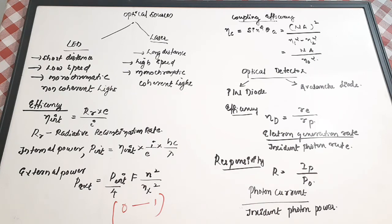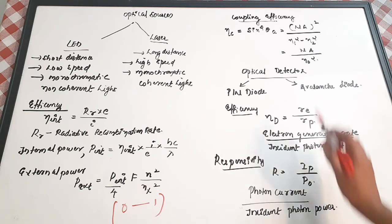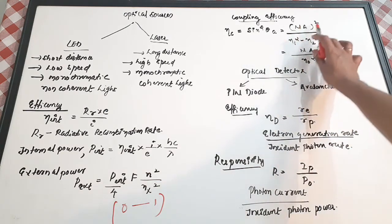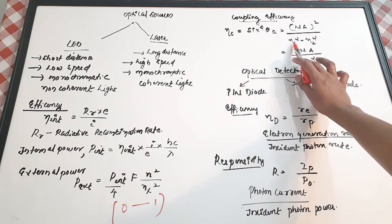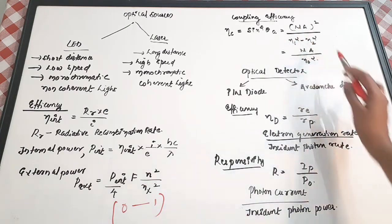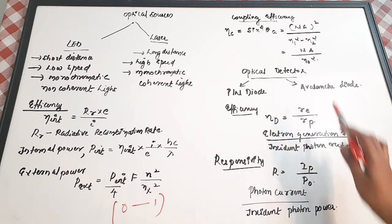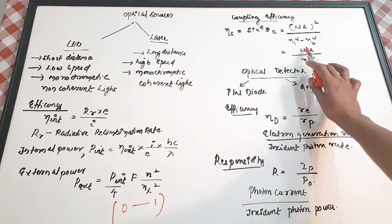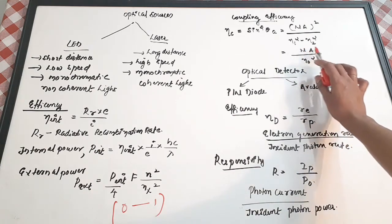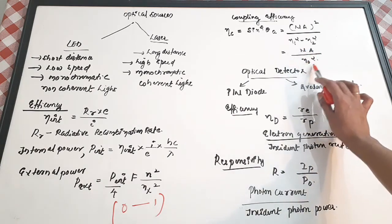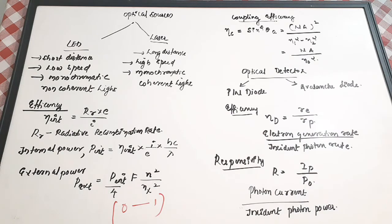Coupling efficiency (η_C) defines the amount of optical power coupled from the LED to the fiber — how efficient the LED is in coupling generated light into the optical fiber. η_C = sin²θa = NA² / (N1² − N2²), which can also be written as (NA/N0)².